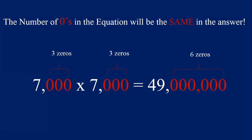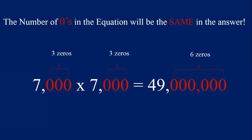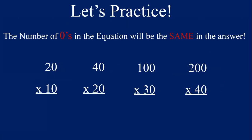Let's try 7,000 times 7,000. It looks like a big number, and it is, but all we really have to multiply is 7 times 7. If you have your math facts memorized and know that 7 times 7 is 49, you can easily find the correct answer. 7 times 7 is 49 — write that first. Count your zeros: 1, 2, 3, 4, 5, 6 — write six zeros after the 49. This number is 49 million. 7,000 times 7,000 equals 49 million.